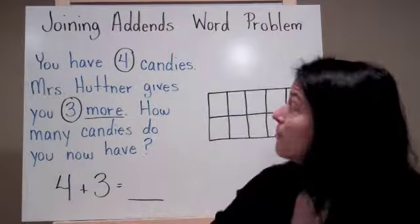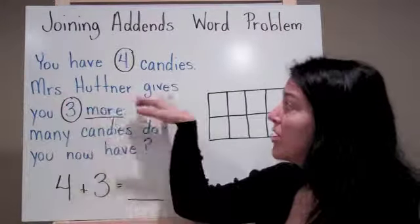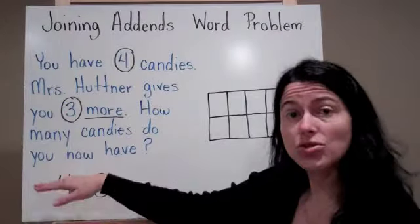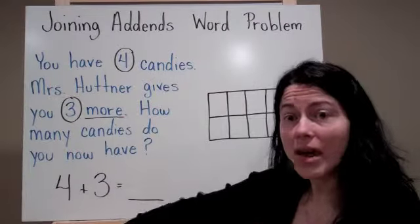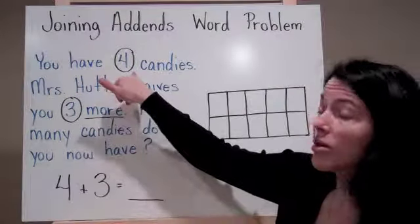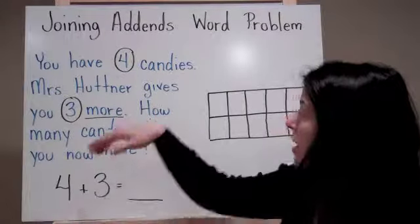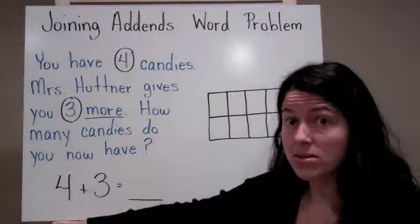Now it's your turn. You have four candies. Mrs. Hutner gives you three more. How many candies do you have now? Here's your addends. Four plus three because you started out with four candies. And I gave you three more. Now use your tens frame to figure out how many candies you have.